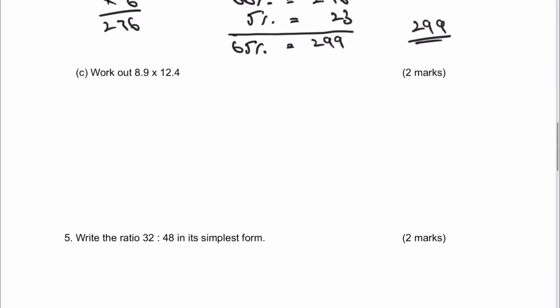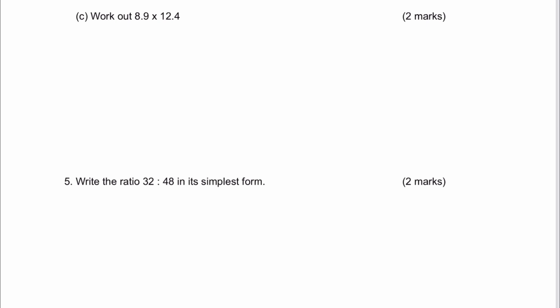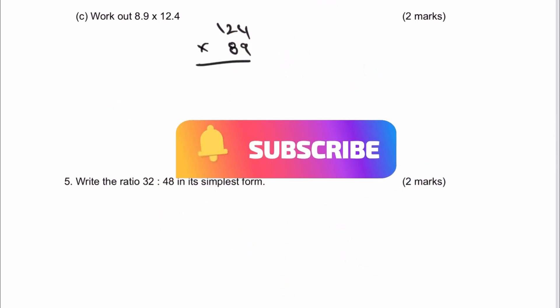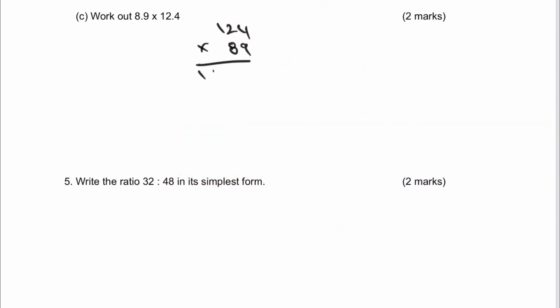Part C involves multiplying decimals. The easiest way is to first multiply 124 by 89, ignoring the decimal point. That gives 11,036. Then I put the decimal point back in two places, giving 110.36. That's the answer to part C, worth two marks.